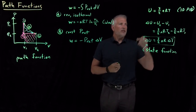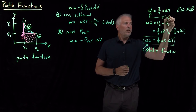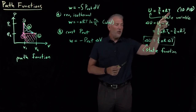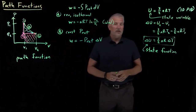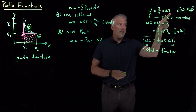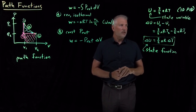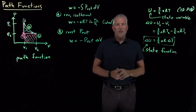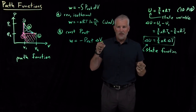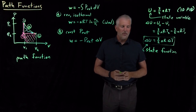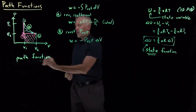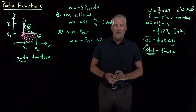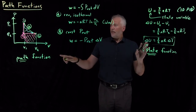Functions like this are called not path functions but state functions, because all I need to know are the states. If I know state 2 and state 1, I don't have to know anything about the path connecting them — just the beginning and ending states give me enough information to calculate the change in energy. We can also call U a state variable, because if I know the state of the system and its temperature, that's enough information to calculate the energy of that state.